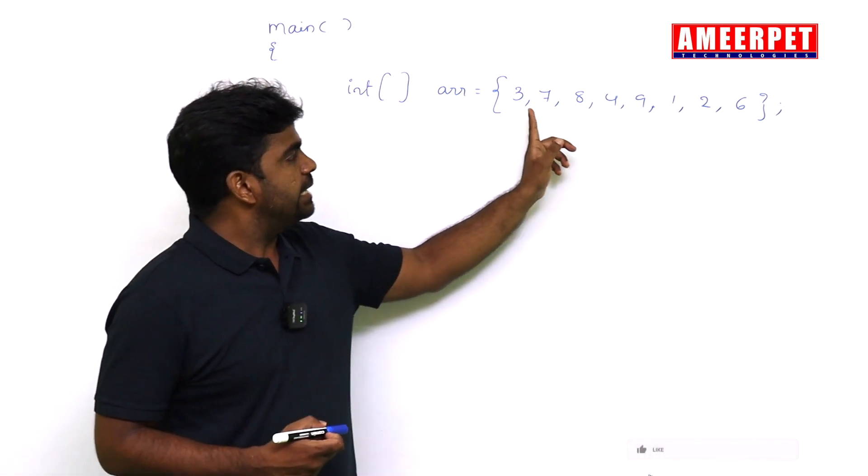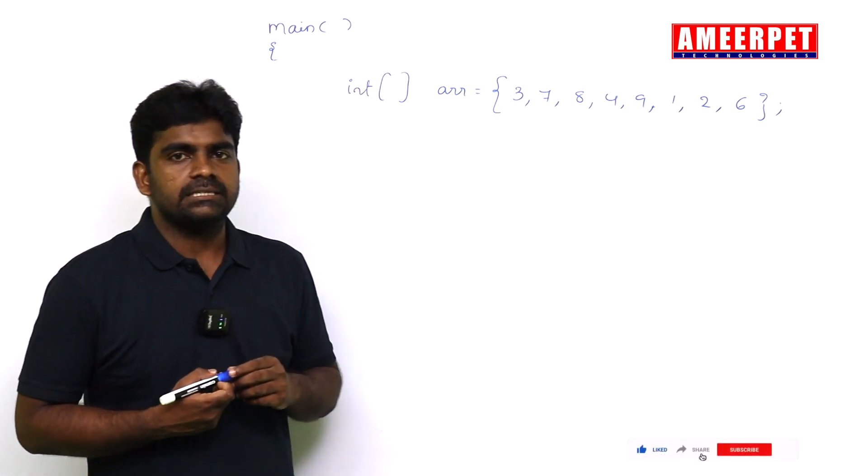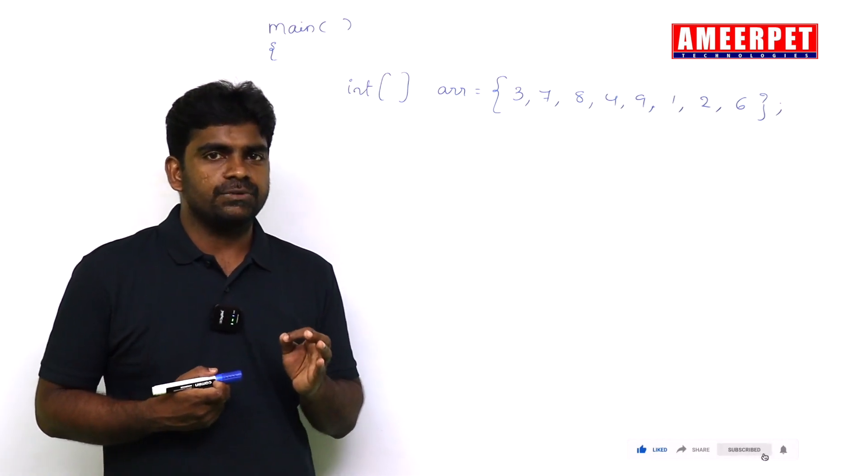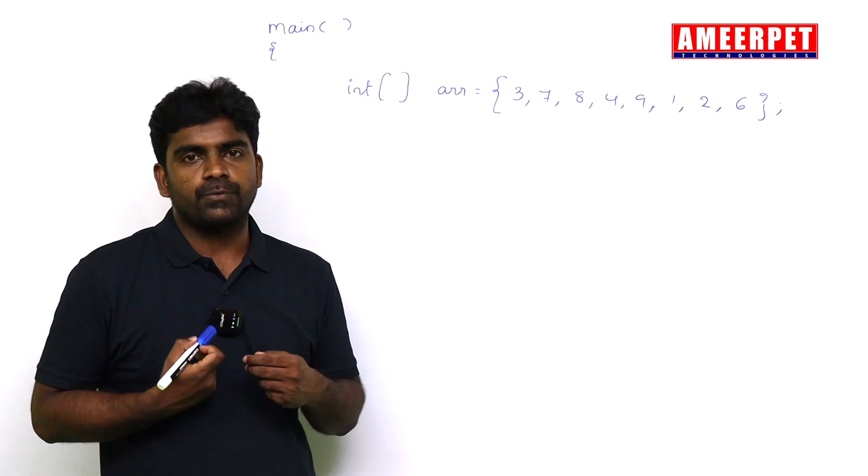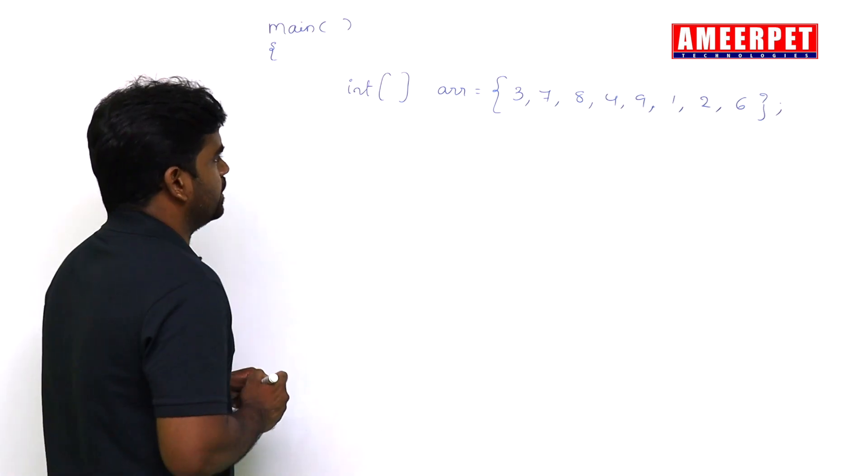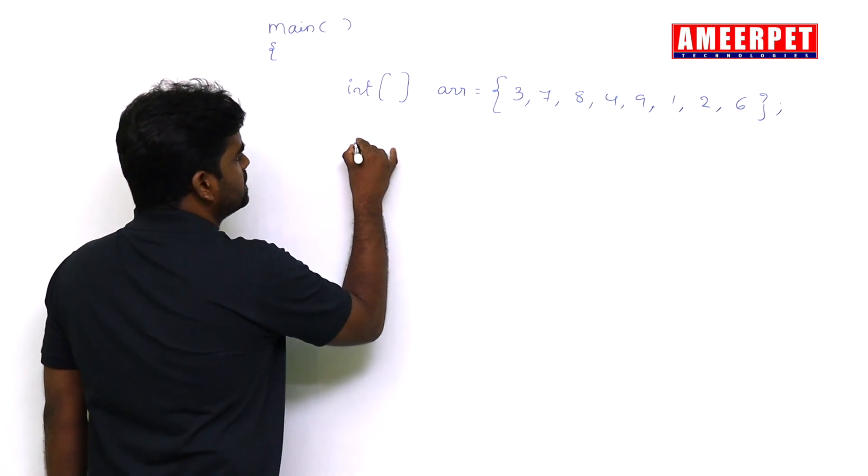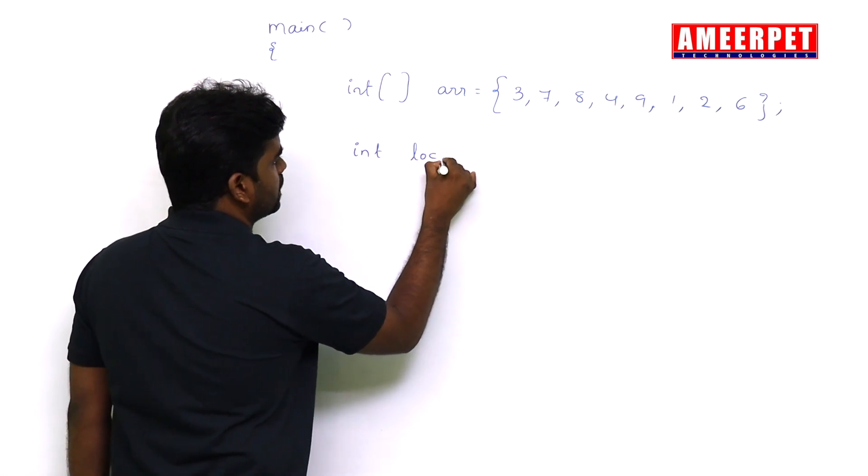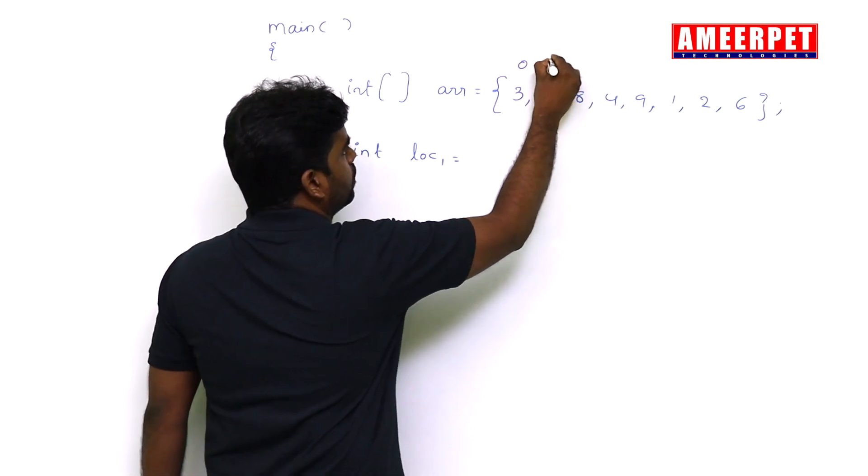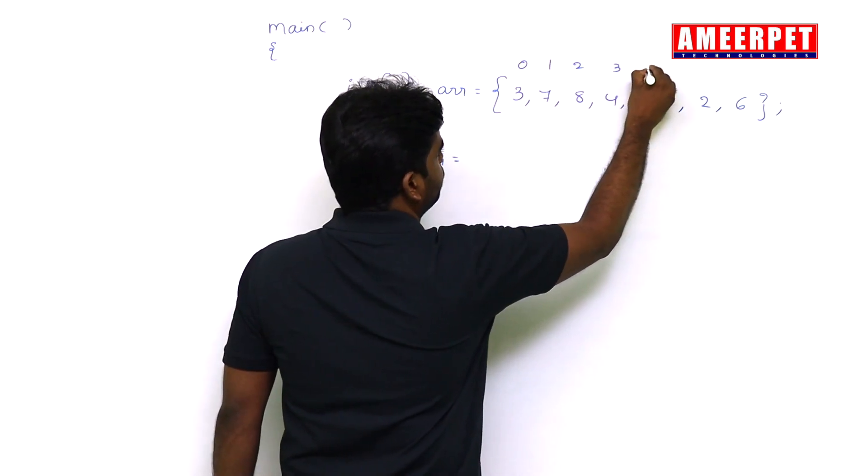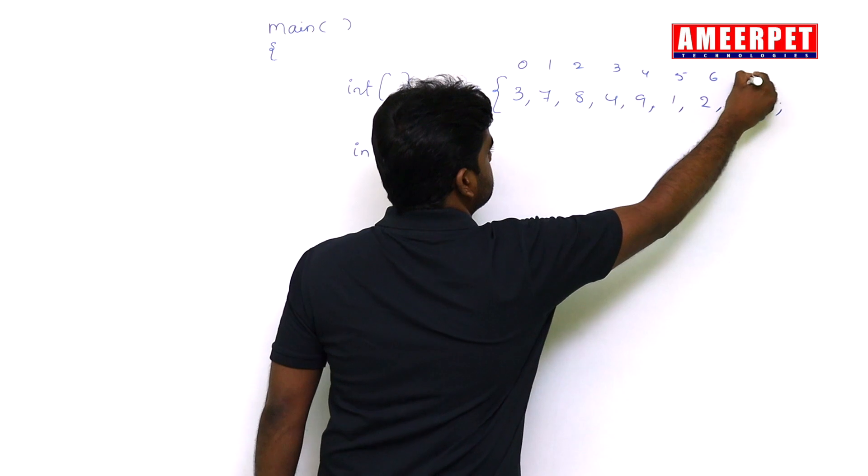We are considering two locations and the elements present inside those locations that I want to swap. See here, directly I am considering the two locations in two variables. Location 1, suppose I am taking an array with indices 0, 1, 2, 3, 4, 5, 6, 7.